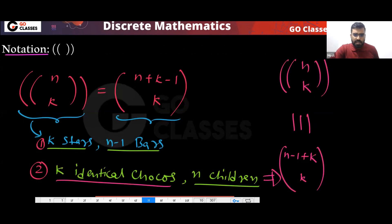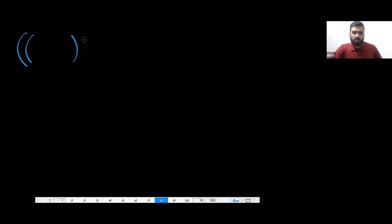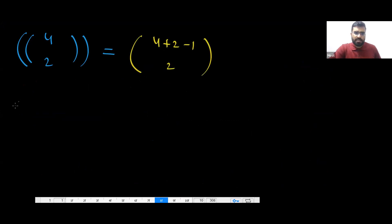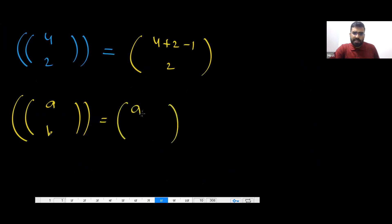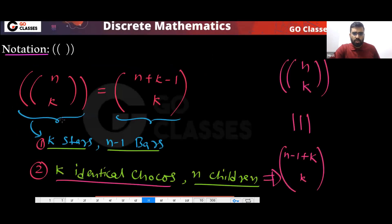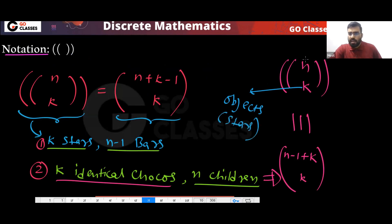For example, if I ask the value for (4 choose 2) in this notation, that means 4+2−1 C 2. In this notation, K represents the objects (stars) and N represents the boxes. So for four boxes and two chocolates, the number of bars will be 4−1 = 3, and you get this value.